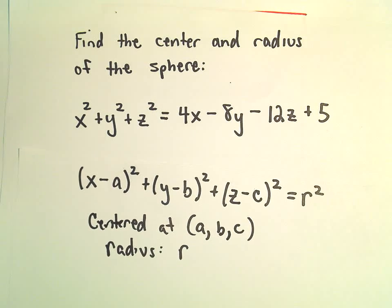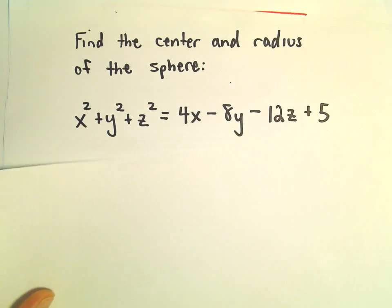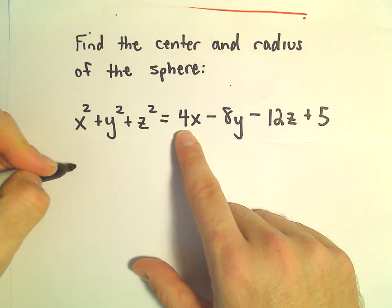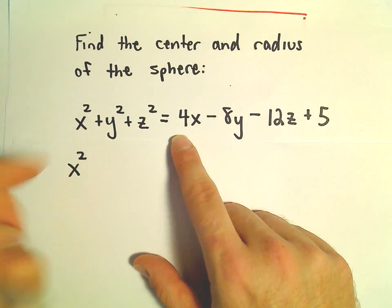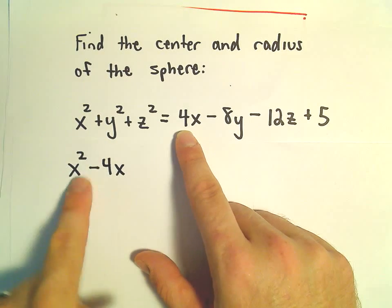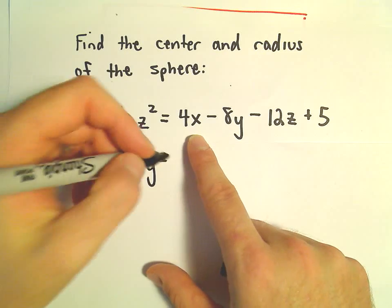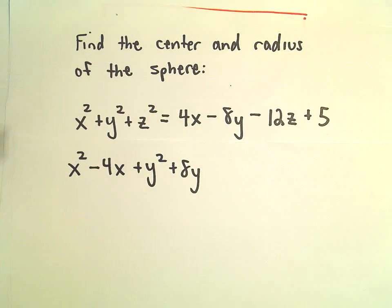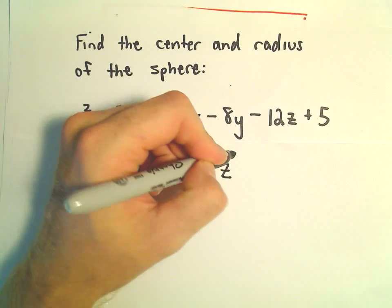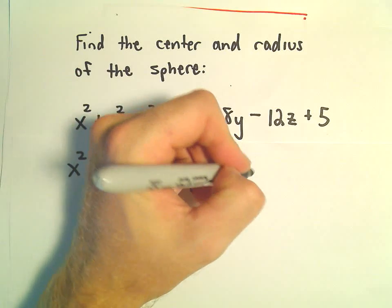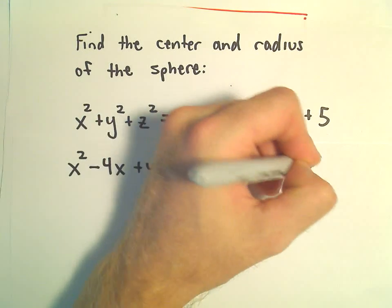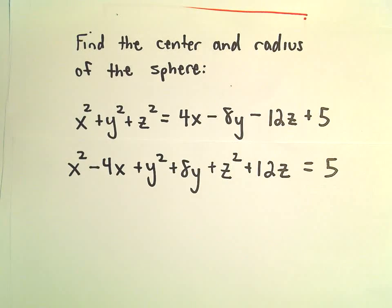So to do this we're going to complete the square. I've got x squared on the left, I'm going to subtract the 4x over and put them together. We've got y squared on the left, I'm going to add 8y and put them together. I've got z squared on the left, I'm going to add the 12z over and leave the constant 5 on the right side.